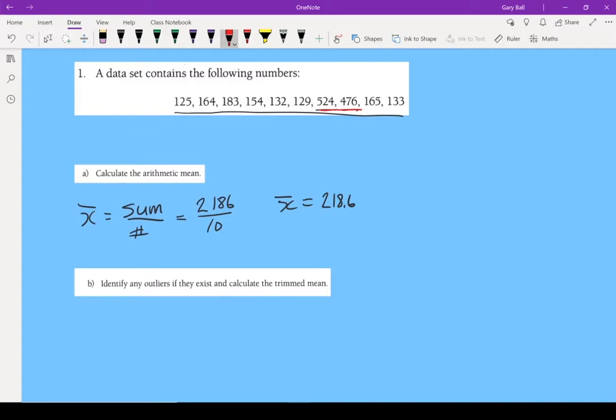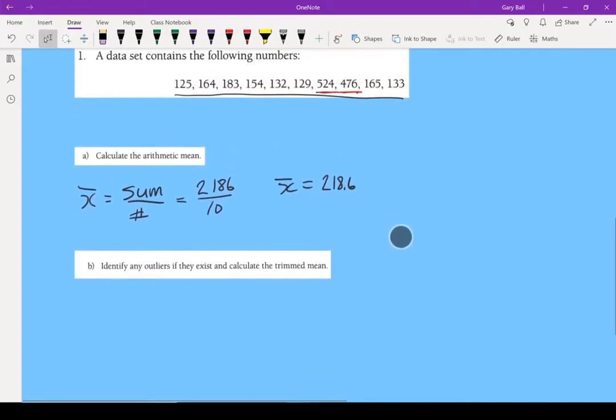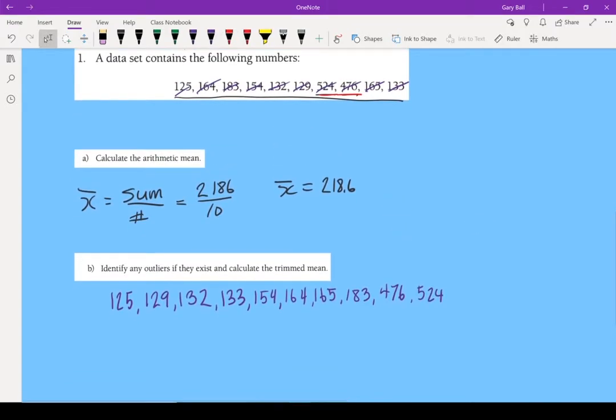Now the first thing you need to do to calculate a trimmed mean is you have to rewrite your numbers in order. Okay, so now I've got my set of numbers rewritten in order. When I look at them, I'm going to use my judgment on which ones seem to be outliers, which ones seem to be way out above and beyond where we should be looking.